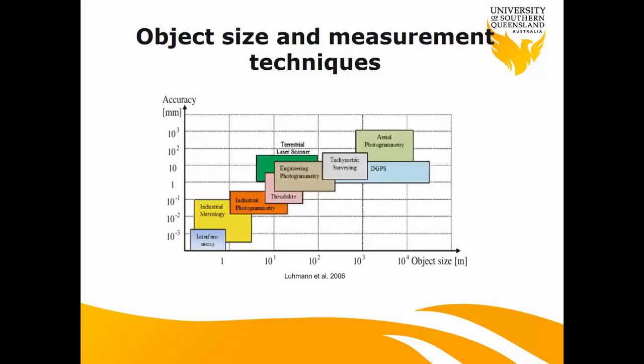This picture here shows different techniques we have in surveying and engineering applications. Based on object size and accuracy requirement, you can decide which technique is suitable. We've already learned about conventional surveying, GPS, RTK, laser scanning, and you're going to learn about metrology next module. For example, aerial photogrammetry is for big areas where very high accuracy is not the priority, and UAV gives you within centimeter accuracy but not great vertical accuracy.